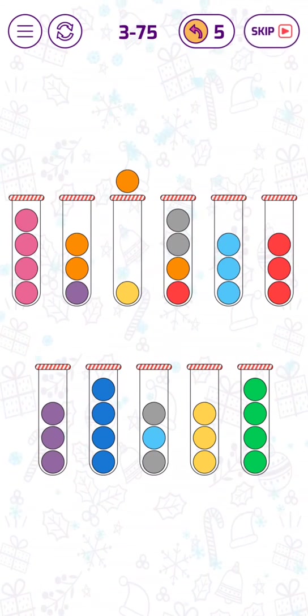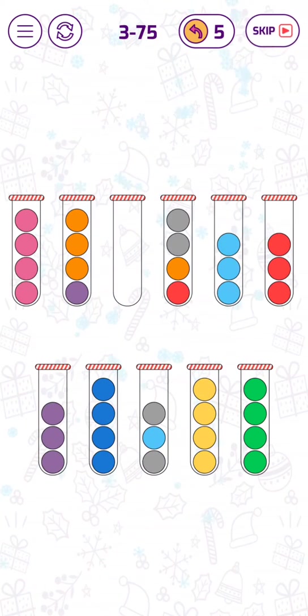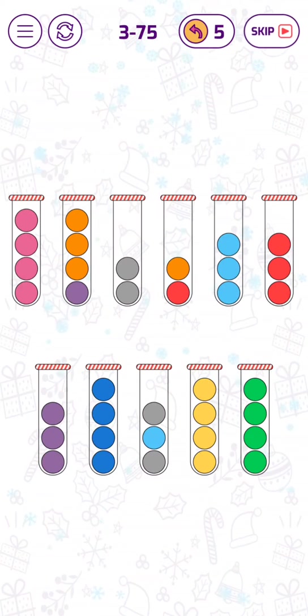We can put this orange bubble here. And now we have one full tube of yellow bubble. Okay, now with the empty tube, we can put the two and the three red bubbles there.